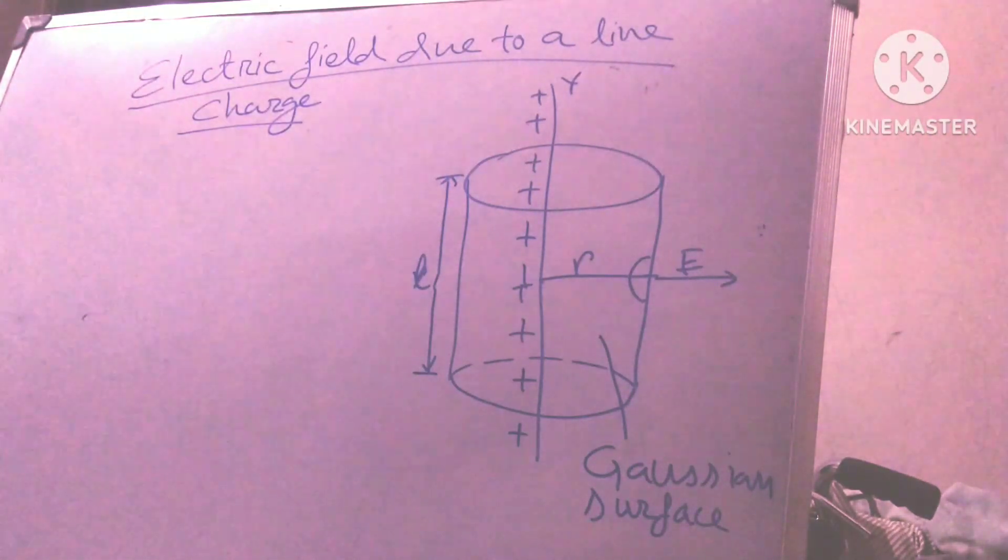Electric field due to a line charge. This is Gaussian surface. This is my line and this is my Gaussian surface.